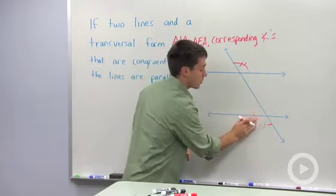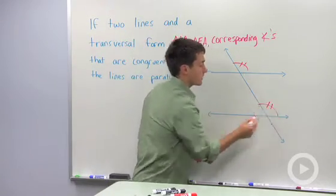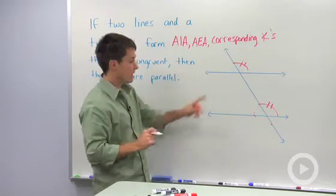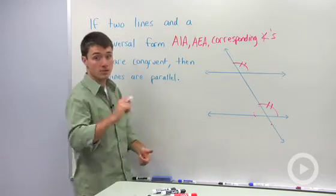And finally, corresponding angles. If you have one pair of corresponding angles that are congruent, you can say these two lines must be parallel. So the converse of the parallel lines theorem is true.